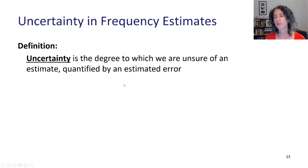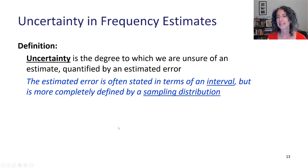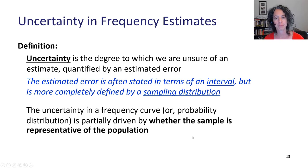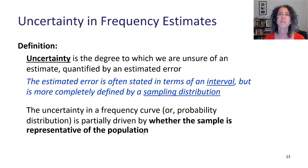To summarize: uncertainty is the degree to which we're unsure of an estimate, quantified by an estimated error. The estimated error is often stated in terms of an interval, like the 90% confidence interval, but more completely defined by a sampling distribution. The uncertainty in the frequency curve is mostly driven by whether the sample is representative of the population, though there are other contributors to uncertainty we'll talk about in this lecture.